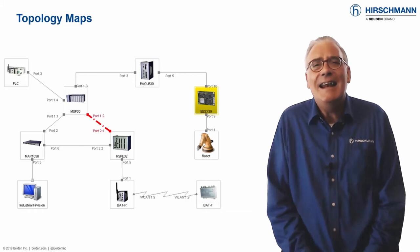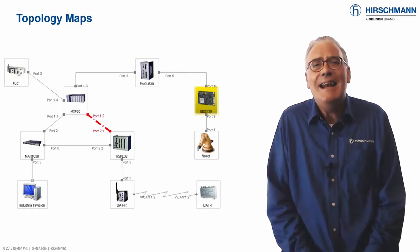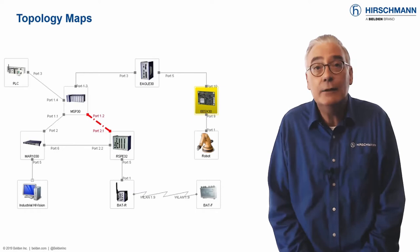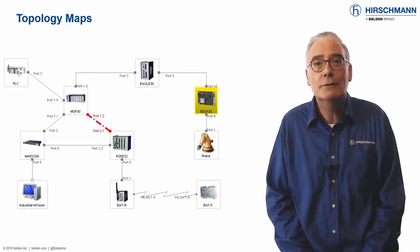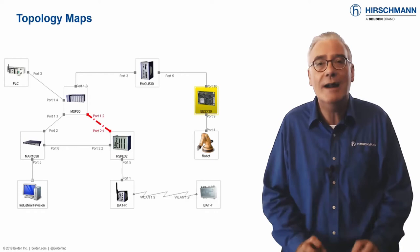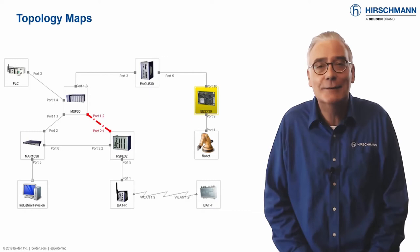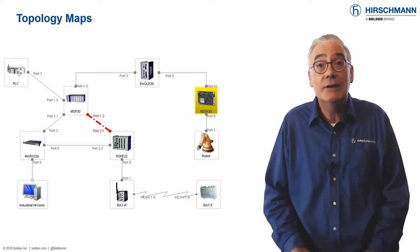A clear network topology map is one of the most important network management tools you can have. Within the map, each device is shown with a real picture so you know exactly what kind of device you are looking at. Double-clicking allows you to drill down into a device for more granular information. Connections show the port numbers at each end of the link, so you always know where the cables are connected. Zigzag lines represent wireless connections, and dotted lines are redundant links, so you can see precisely where your data is flowing.